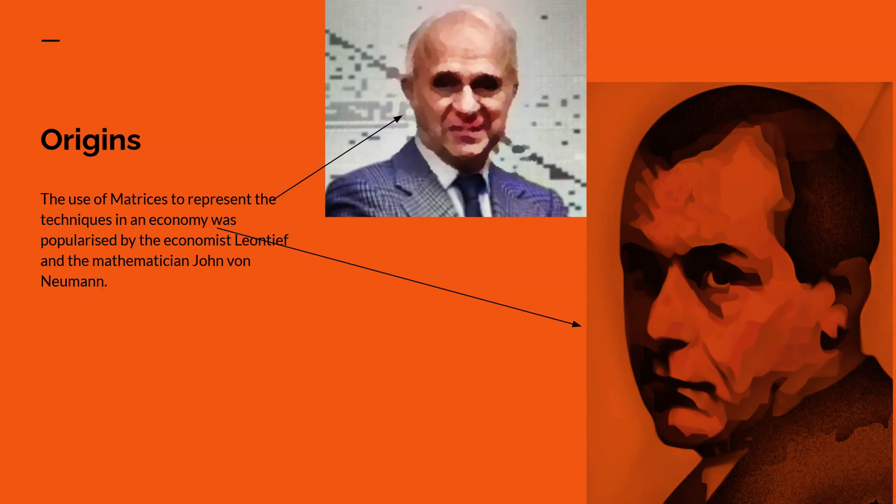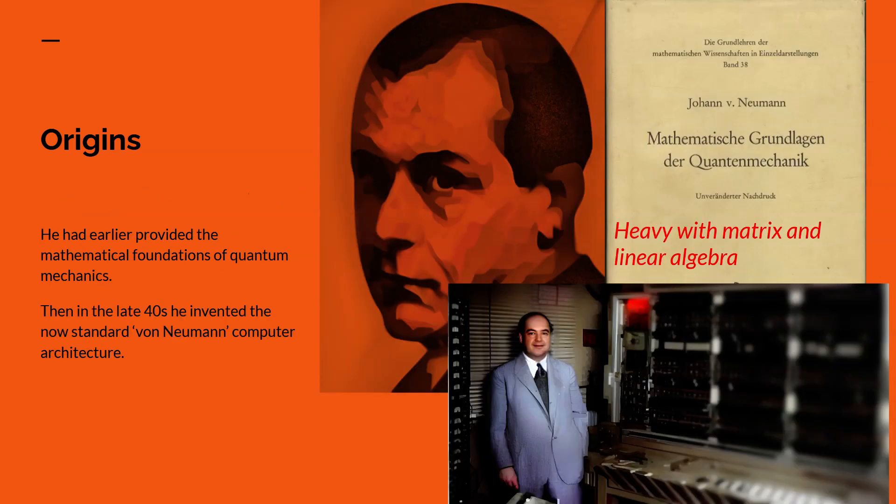These first few slides are repetitions. I'm saying the use of matrices to represent the economy comes from two guys, Leontief and von Neumann. Arguably von Neumann is slightly ahead of Leontief. But since von Neumann was a mathematician rather than an economist it didn't initially produce much impact.